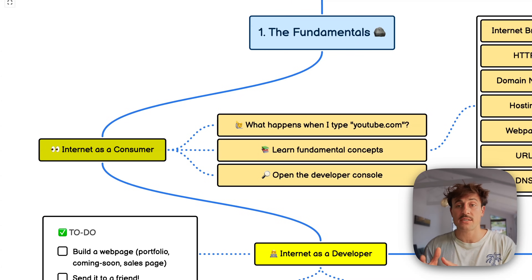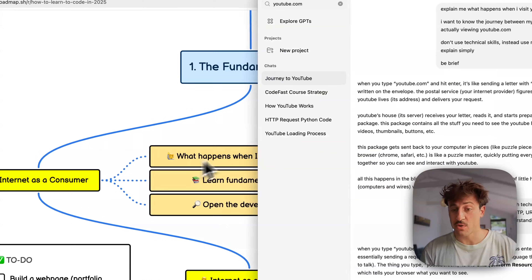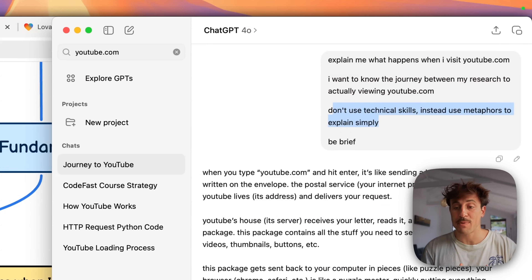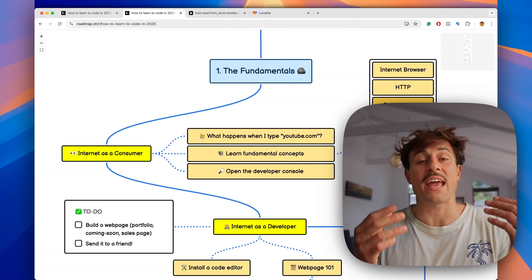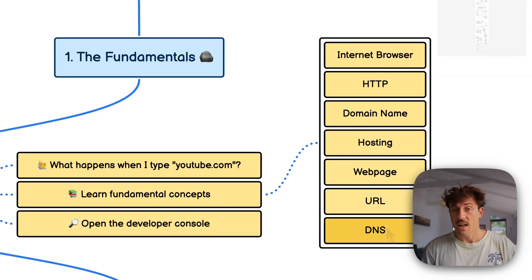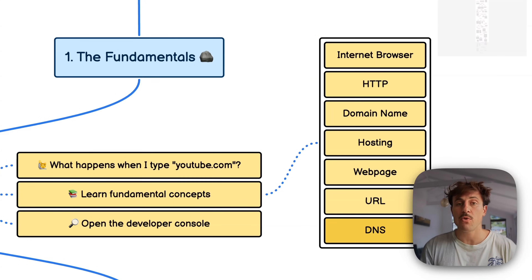Start first with the fundamentals — use AI not to code, but to explain how the internet works. As a consumer, you are already browsing the internet right now. Go to ChatGPT and ask it to explain what happens when you visit your favorite website, using metaphors and no technical jargon. Try to understand the overall journey of visiting a website. Then learn the core concepts: internet browser, HTTP, URL, and DNS. Use ChatGPT to explain each one without going too deep into the details.